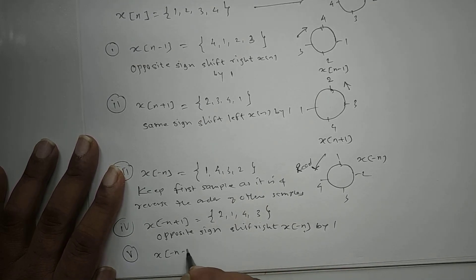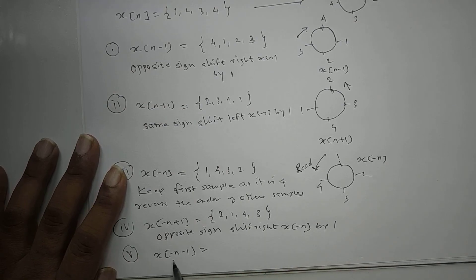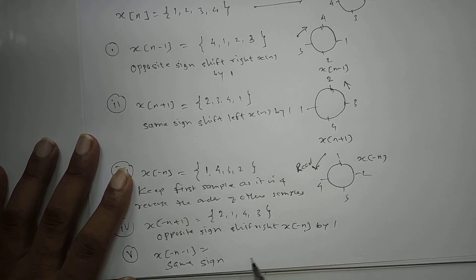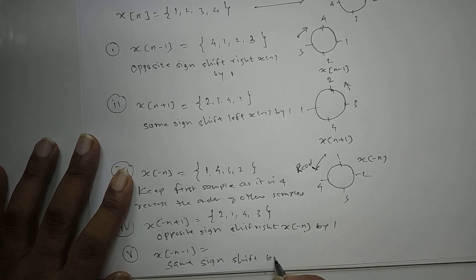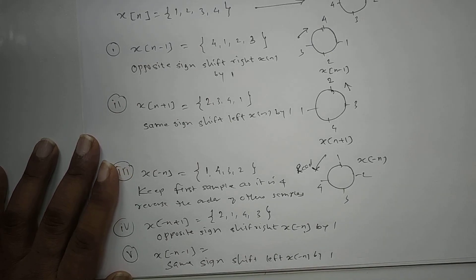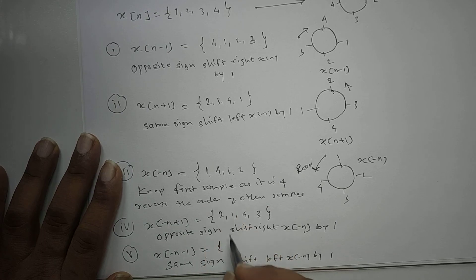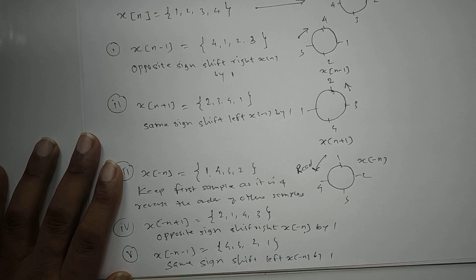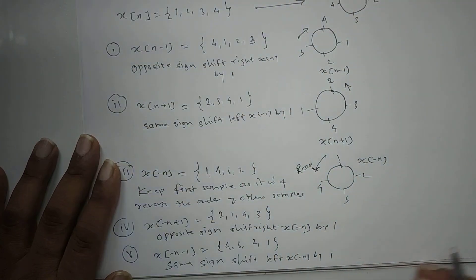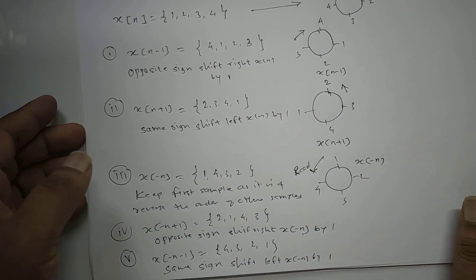For x[-n-1]: n has minus sign and constant also has minus sign - same sign. Same sign means shift left. So we shift x[-n] left by 1. x[-n] = {1, 4, 3, 2}, shifting left by 1 gives {4, 3, 2, 1}. So x[-n-1] = {4, 3, 2, 1}. This is called circular time shifting.